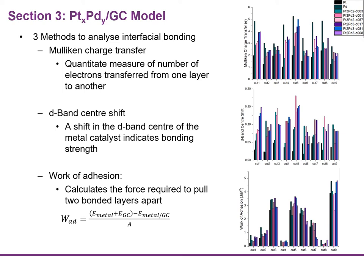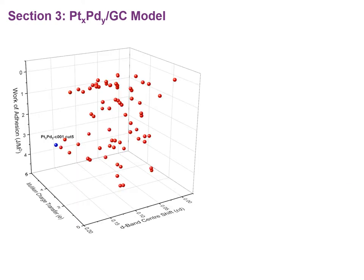As you can see to the right, this was done for all of the different glassy carbon cuts and metal models. As you can see, there are quite a lot of data points and it's quite difficult to draw any correlations from these resulting graphs. To reduce the complexity, a three-dimensional chart was constructed in which each axis describes the data obtained by the three different methods used to analyze the interfacial bonding. This reduced the number of data points and allowed us to see which interfacial models performed the best.